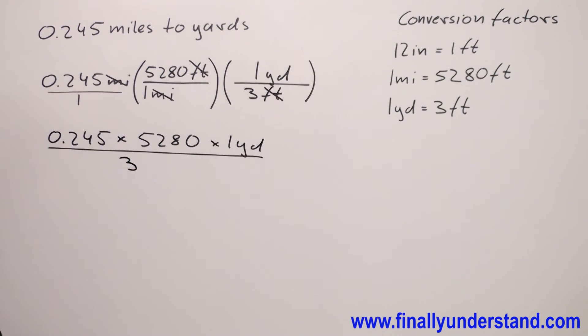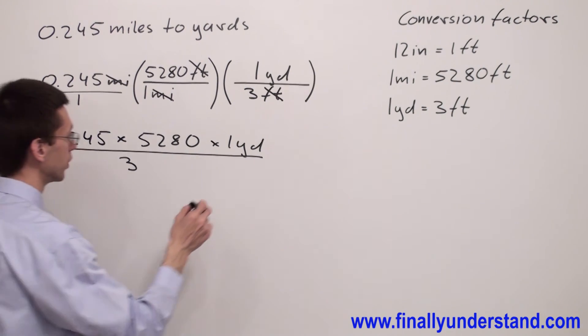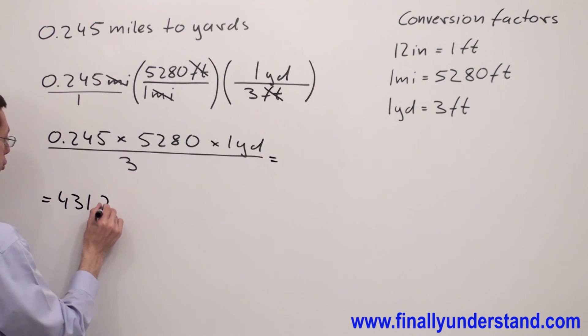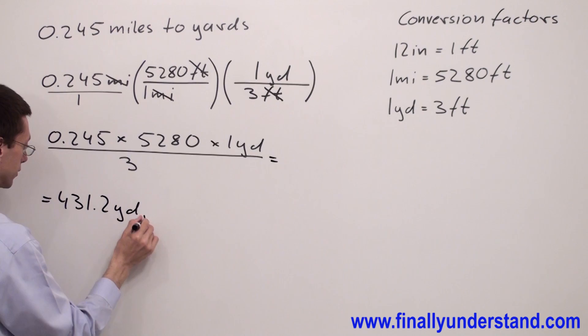Now we can use the calculator and simply multiply the numbers in the numerator and divide by the denominator. You're supposed to end up with the answer 431.2 yards. This is the solution to the problem.